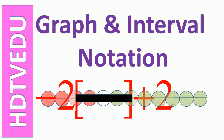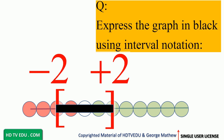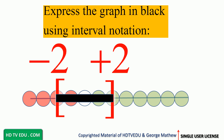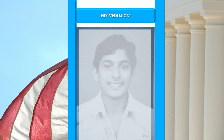Graph and interval notation question: express the graph in black using interval notation. This is the origin, positive one — one unit to the right — positive one, positive two, negative one, negative two. Welcome to hdtvedu.com, direct and simple education.